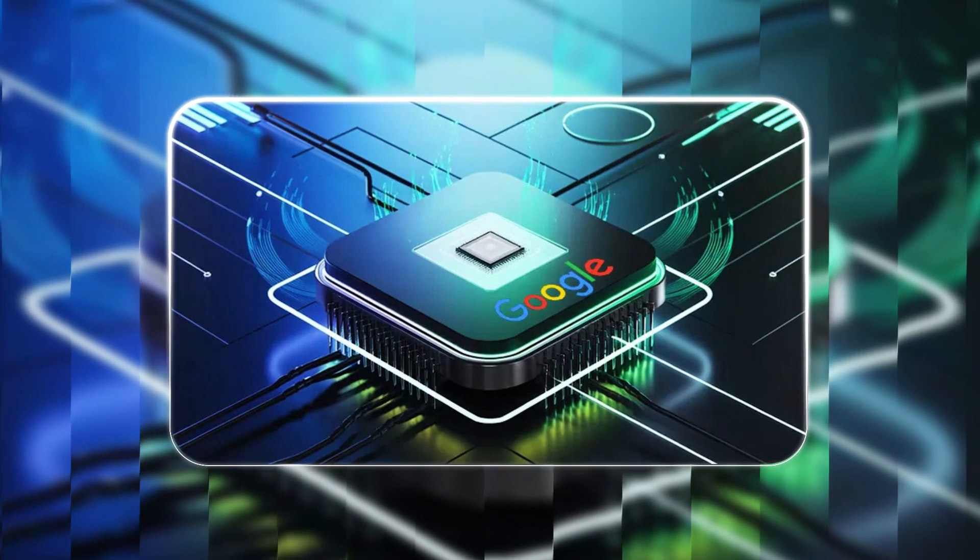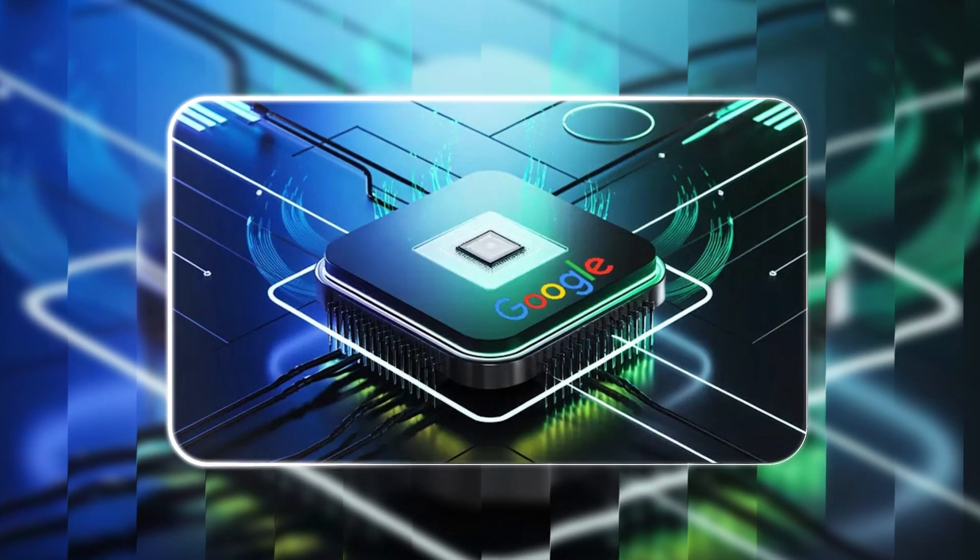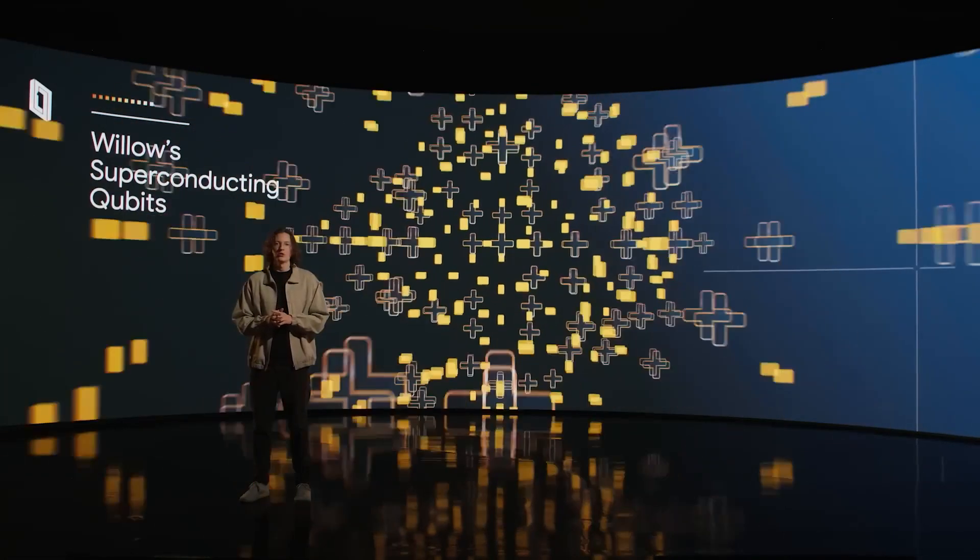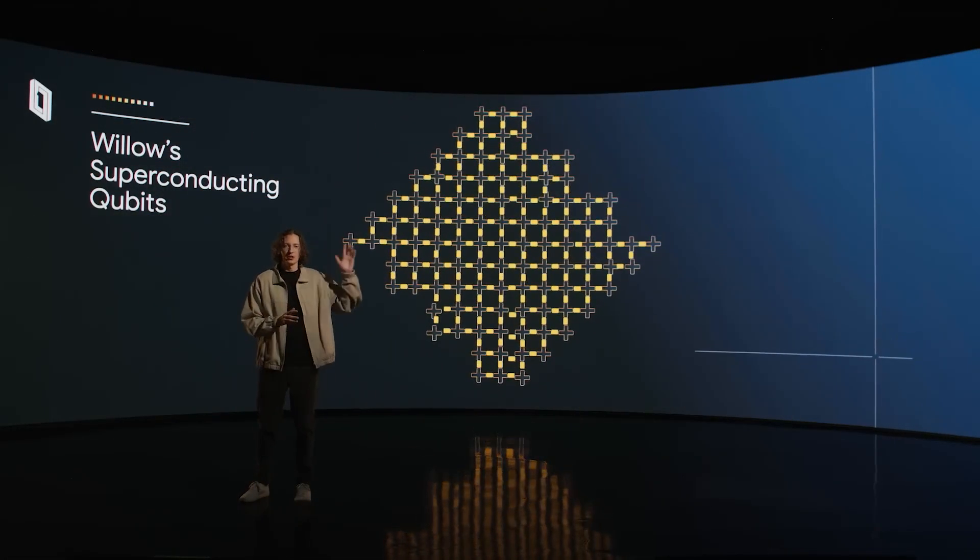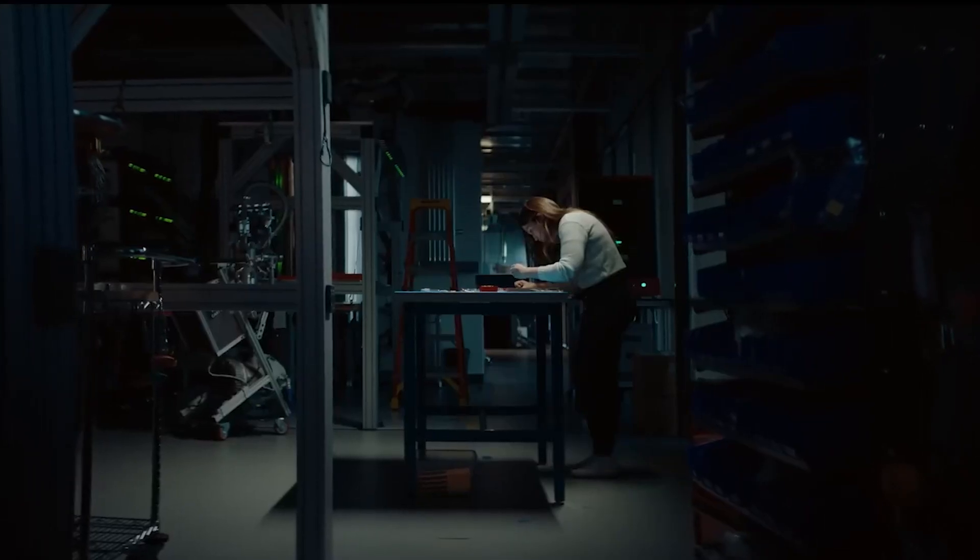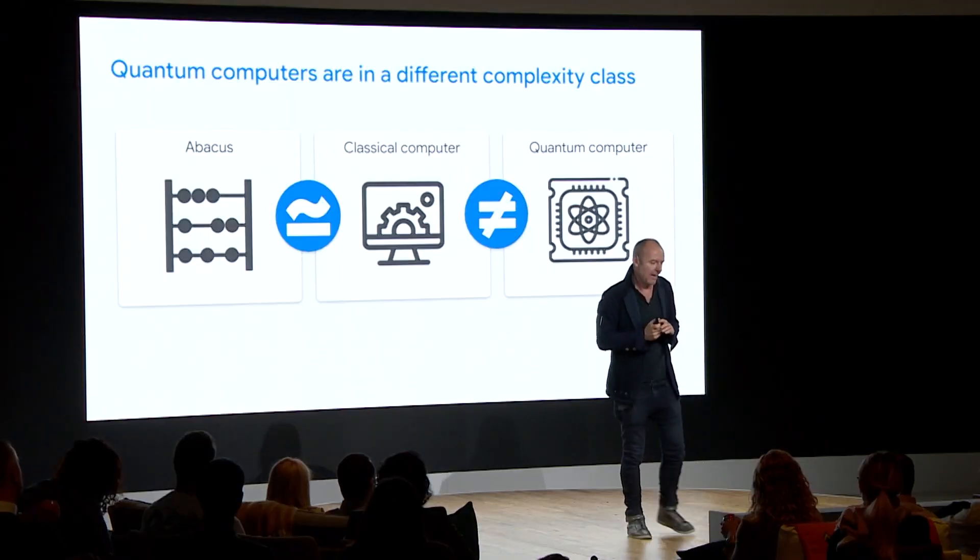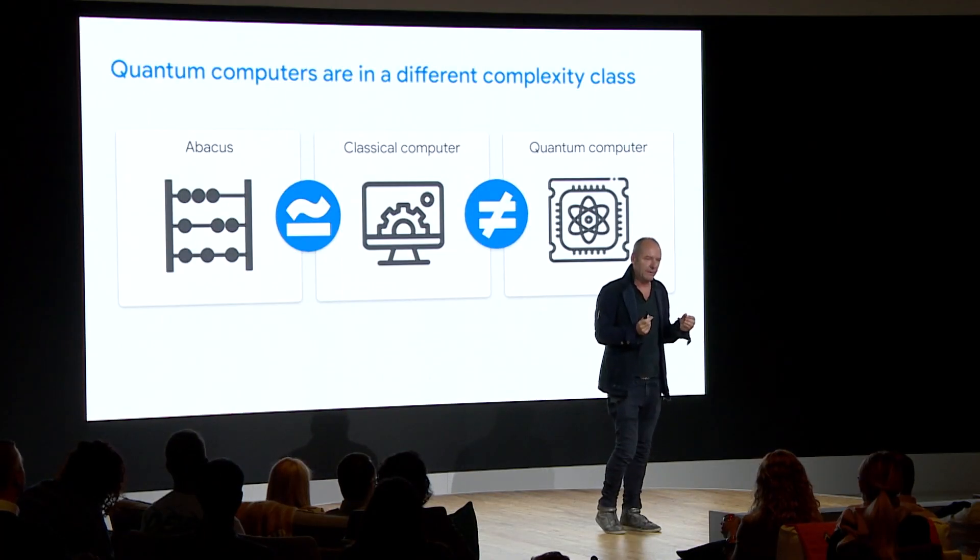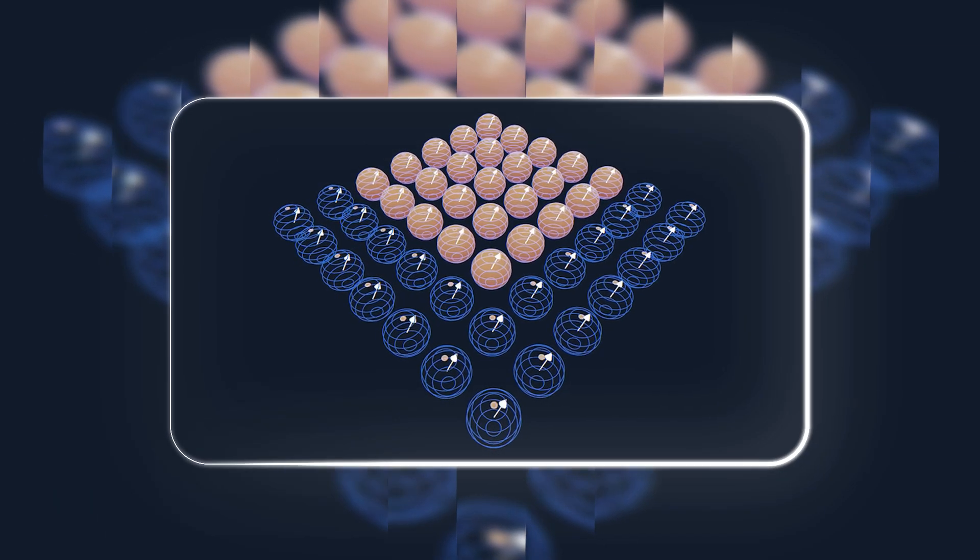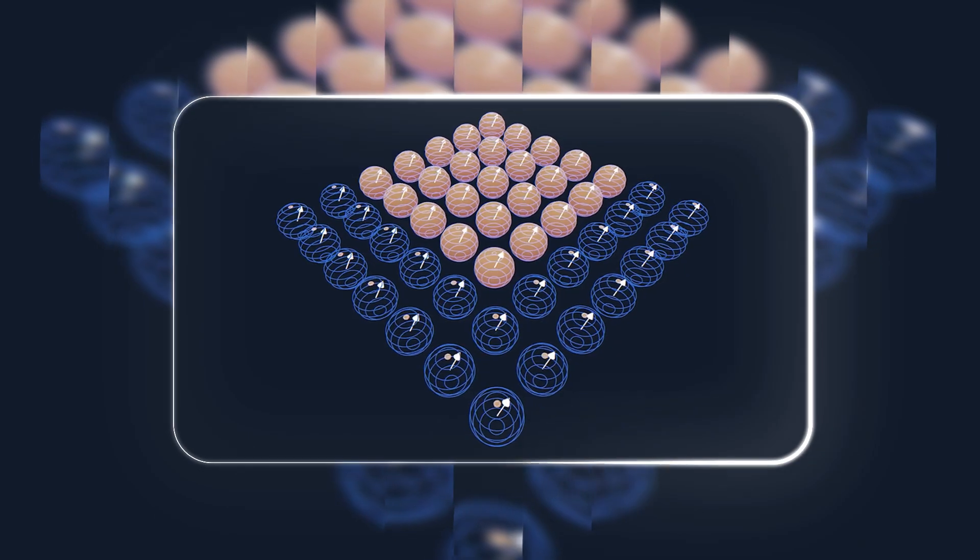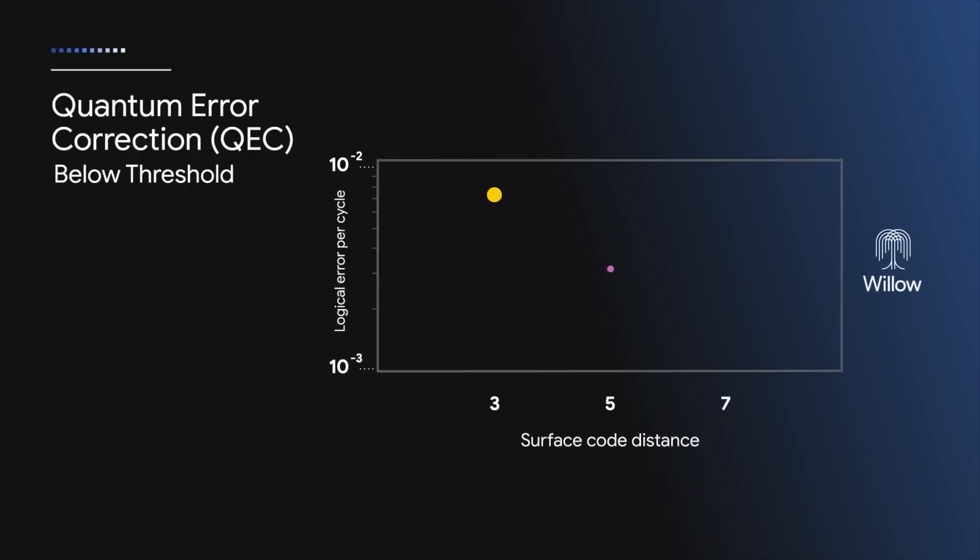Enter Google's Willow chip, which marks a historic breakthrough. Willow addresses this longstanding challenge by achieving exponential error reduction as more qubits are added, a feat that researchers have been working toward for nearly 30 years. This achievement, which Hartmut Neven, the leader of Google Quantum AI, highlighted during the announcement, is a game-changer. Willow's error rates actually decrease as the qubit grid scales up, a concept known as below-threshold performance.